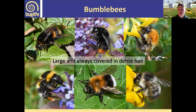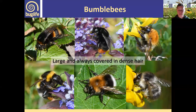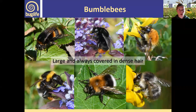Bumblebees are a really easily recognisable group. They tend to have large, densely furry bodies. Some have colour bands or different colour tips to the tails; some are completely ginger. Bumblebees are social, forming nesting colonies from a few dozen workers up to several hundred, utilising things like old small mammal burrows, grassy tussocks, bird boxes, or wood piles. They have an annual life cycle involving mass provisioning of pollen to feed their young.